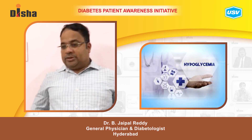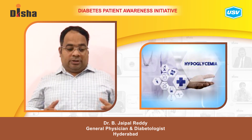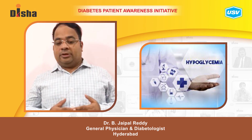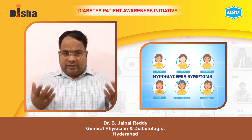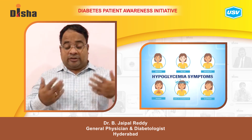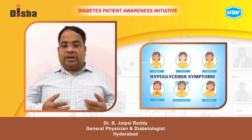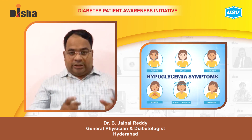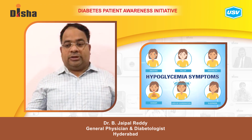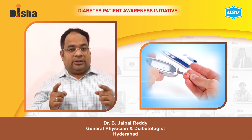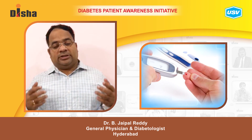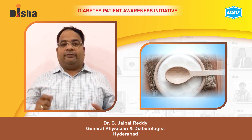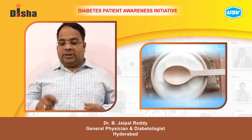Now I am going to discuss how to recognize and treat hypoglycemia. If any diabetic patient gets severe sweating and collapses, you must immediately check the blood glucose. If it is below 70, this is hypoglycemia. There is a Rule of 15 for treating hypoglycemia.